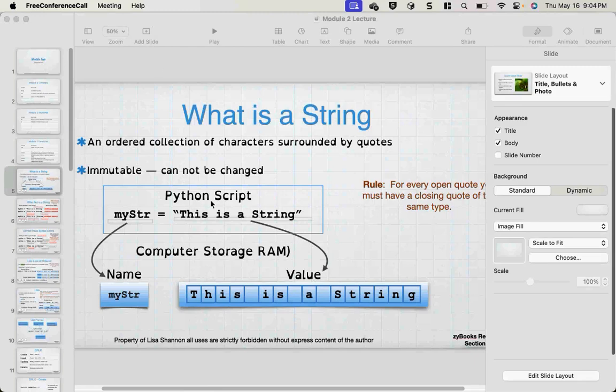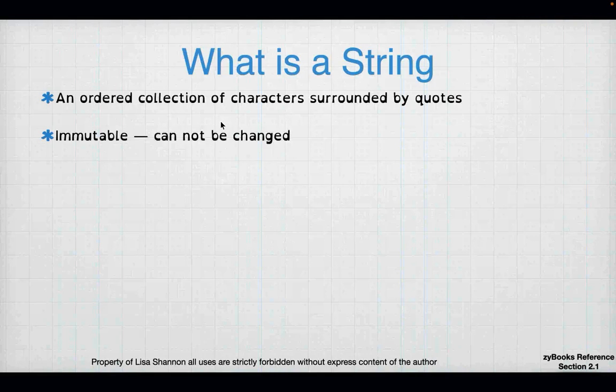A string is an ordered collection of characters, and it's immutable, which means it cannot be changed. That's interesting because you can create a string from another string, but it's a new string you're creating — not something changed in place. Python makes a copy, and while making the copy, it does whatever changes you want.